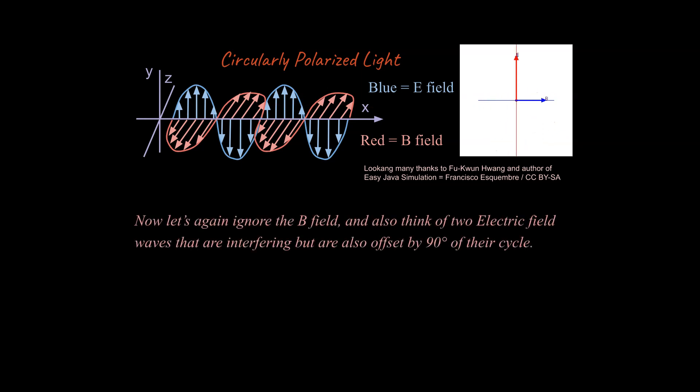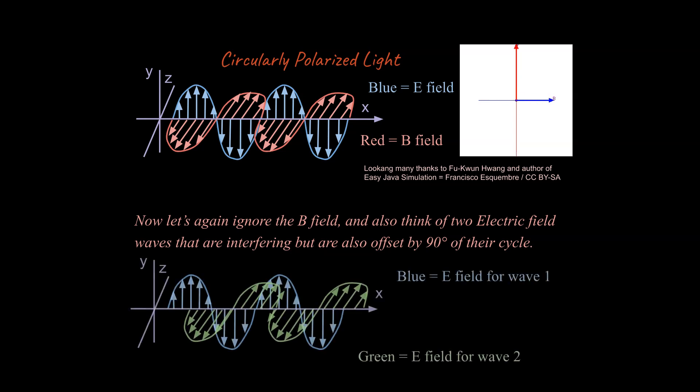So to make this easier, let's again ignore the magnetic field and think of two electric field waves that are now interfering, but they're offset by 90 degrees, which means they have been phase shifted one from another by 90 degrees. So let me show you what I'm talking about.